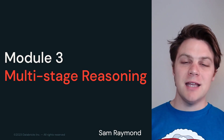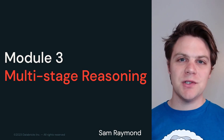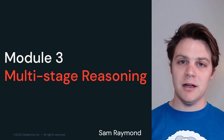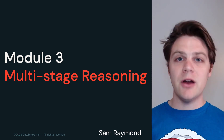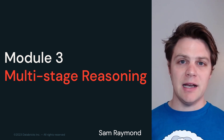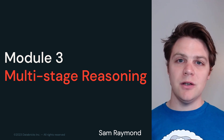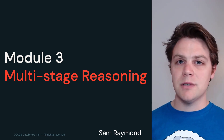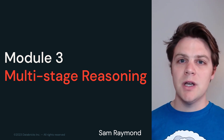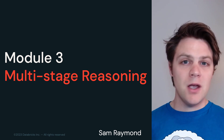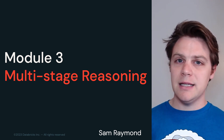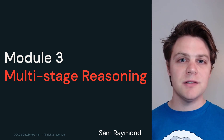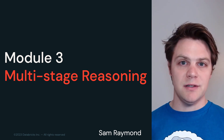Welcome to module three. In the last two modules, we saw how we can download large language models from places like Hugging Face to solve various tasks in NLP. We also saw how we can convert our data to vector format and perform vector type searches using vector databases. You might be wondering then, how can we combine these two features together to really enhance the applications that I can build as a developer?